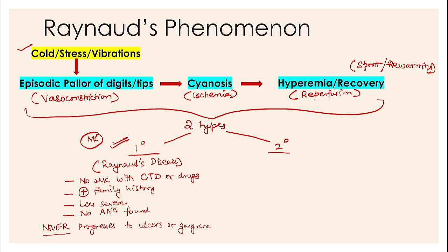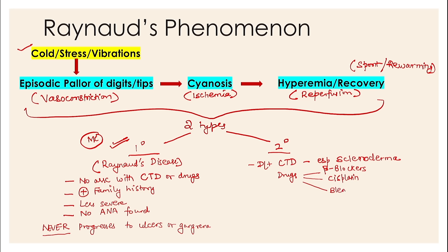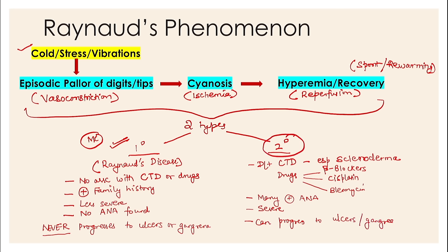Most importantly, primary Raynaud's phenomena never progresses to ulcer or gangrene. If Raynaud's phenomena produces ulcer or gangrene, it can never be primary Raynaud's disease. On the other hand, secondary Raynaud's phenomena has an underlying cause — often connective tissue disorders, especially scleroderma (systemic sclerosis). It can also occur due to drugs: beta-blockers like propranolol, anti-neoplastic agents like cisplatin, and bleomycin.